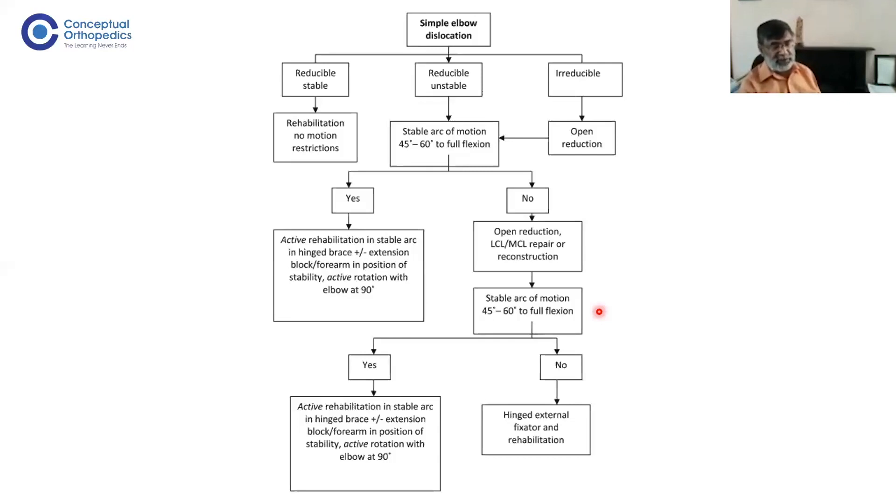You will find occasional cases where even a simple elbow is quite unstable. I've seen a few cases, especially high BMI people, where it's very difficult to maintain reduction. Simple trauma can cause a lot of soft tissue damage—they probably damaged all their common flexor and extensor, both medial and lateral, so they become quite unstable even in flexed position.